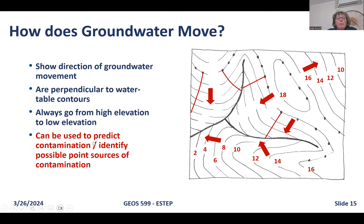Groundwater flow lines can be used to predict contamination and identify possible point sources of pollution — a point source being one specific fixed activity such as a landfill or a processing plant.